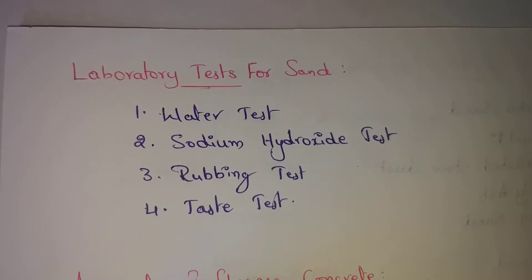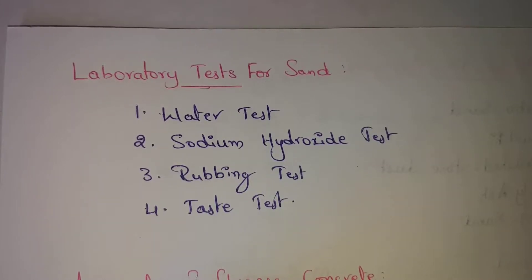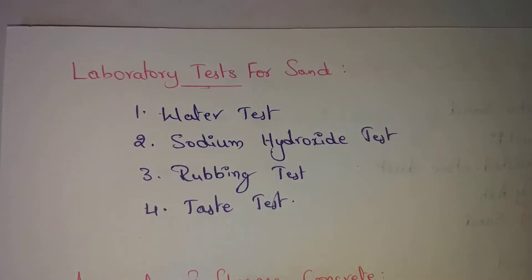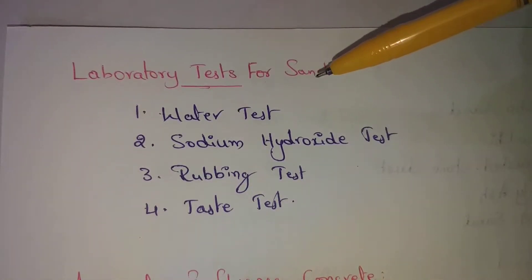After shaking, allow the mixture to settle. The sand will set at the bottom. If silt is present in the sand, it will form a small layer on top of the settled sand. This way we can find out if silt is present using the water test.